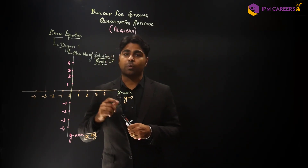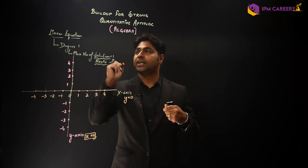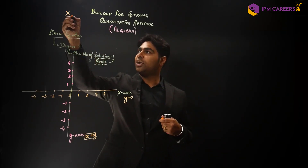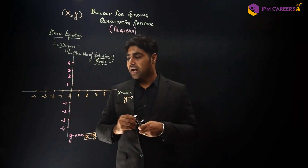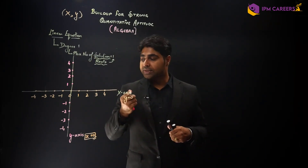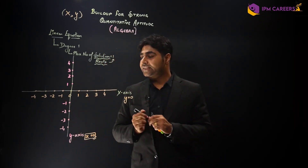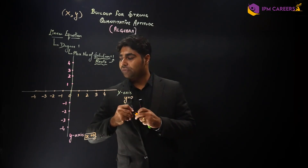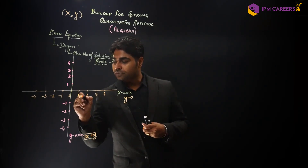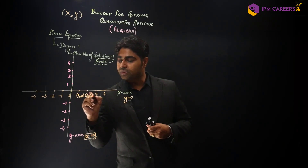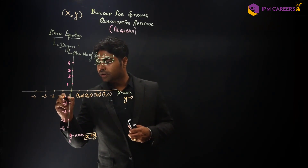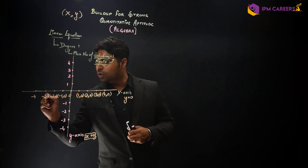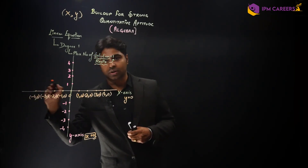Now, what is the nomenclature? The nomenclature says that whenever you put values, first put the value of x, then put the value of y. So here x value is 1, but because this entire line means y is equal to 0, we write along with 1: (1,0), (2,0), (3,0), (4,0), and on the other side: (minus 1, 0), (minus 2, 0), (minus 3, 0), (minus 4, 0) and so on.